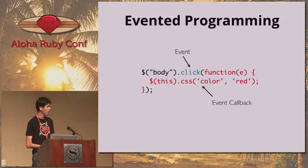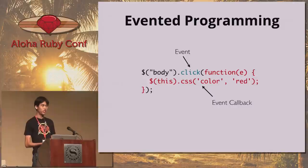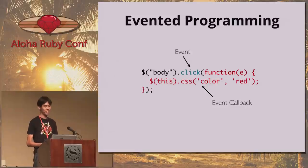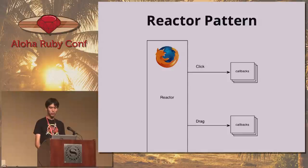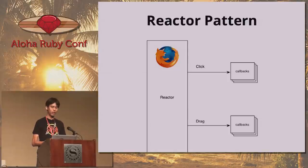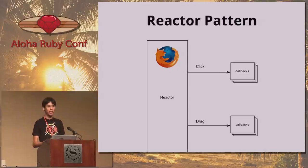So what is evented programming? All it is is registering function callbacks for events that we care about. We already do this every day when we're doing client-side JavaScript. A code snippet might say whenever there's a click on the DOM, change the text color to red. That is an example of the reactor pattern. The reactor is a system responsible for listening to events that are triggered — in our case the reactor is the browser. When it notices a click event or a drag event, it delivers those events to any callbacks you've registered.